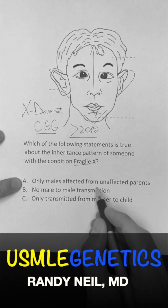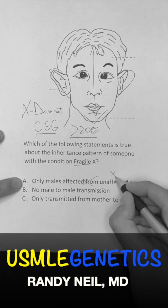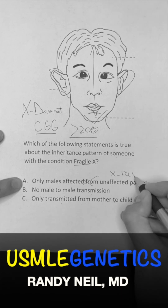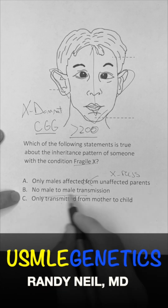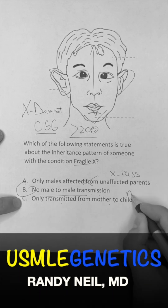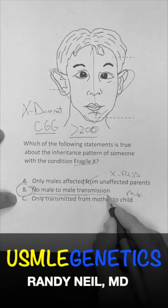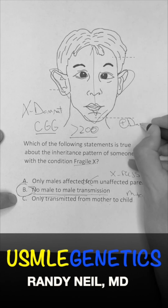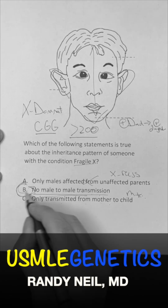Is it only males affected from unaffected parents? No, that's X-linked recessive. Is it B, no male-to-male transmission? Looks good. Is it C, only transmitted from mother to child? No, that's mitochondrial. The correct answer is B, no male-to-male transmission. Also look for the positive dad to positive daughter pattern. Answer choice B, no male-to-male transmission.